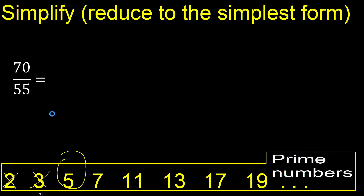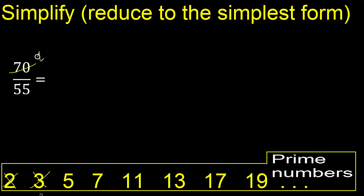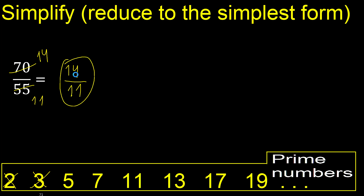They can be divided by 5, because the last digit is 0 or 5. Therefore, 70 divided by 5 is 14, and 55 divided by 5 is 11. We finish here because 14 and 11 cannot be divided by the same number.